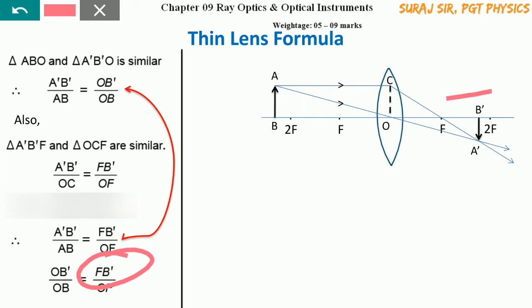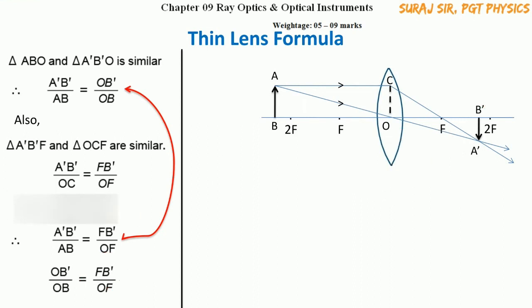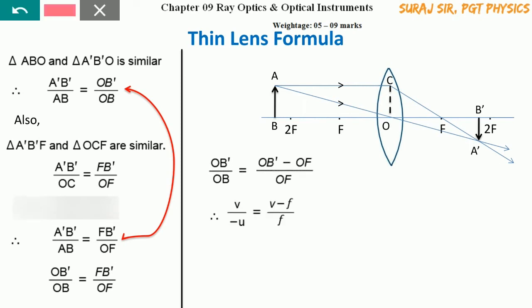The segment length FB' is not a standard variable, so we replace it: FB' = OB' − OF. Substituting into our equation gives OB' / OB = (OB' − OF) / OF.